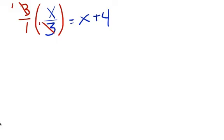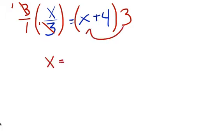What's going to happen is that this 3 is going to cancel out and change to 1, and this 3 is going to cancel out and change to 1. Remember, if I multiply that side by 3, I have to multiply this side by 3. So now this becomes x equals 3x plus 12. All I did is take this weird-looking equation with a fraction and change it into a regular two-step equation.